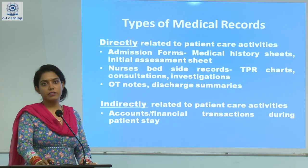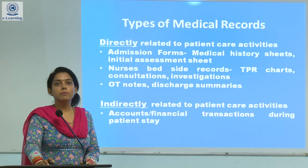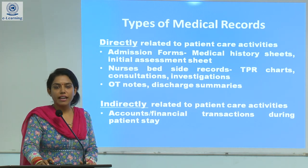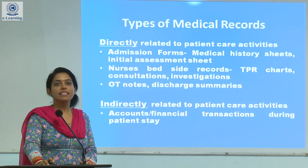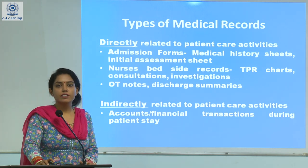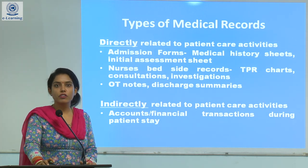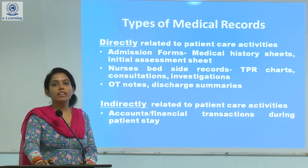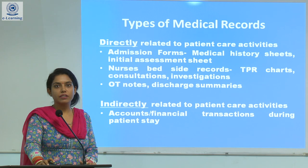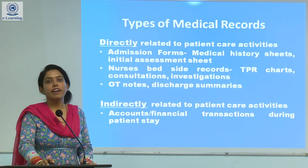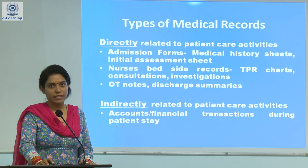Now, types of medical records. We basically divide medical records into two types: directly related to the patient care activities and indirectly related to the patient care activities. Directly related includes the progress report, OT sheet, and post-operative sheets. Indirectly related basically contains accounts or financial transactions during the patient's stay.